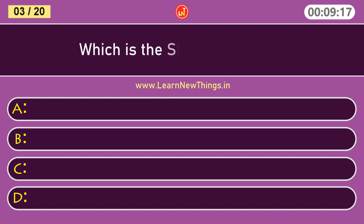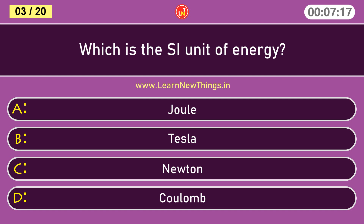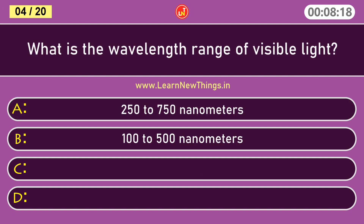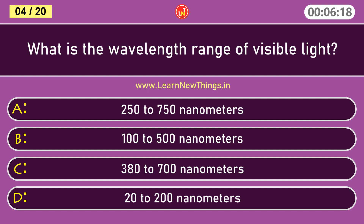Which is the SI unit of energy? Joule. What is the wavelength range of visible light? 380 to 700 nanometers.